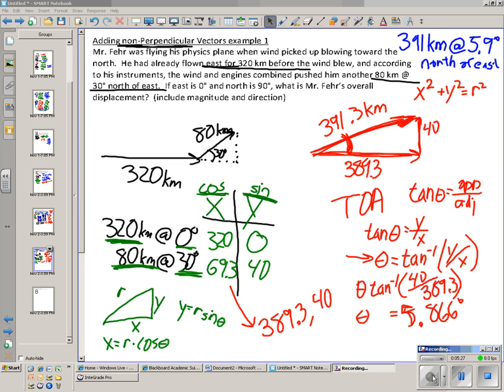And I notice that those values are quite reasonable because 391 is larger than either 389.3 or 40 individually but not larger than the two of them added together. And the 5.9 degrees part makes sense because look, this is quite small compared to this side, so it makes sense that this angle here is going to be considerably smaller than 45 degrees.